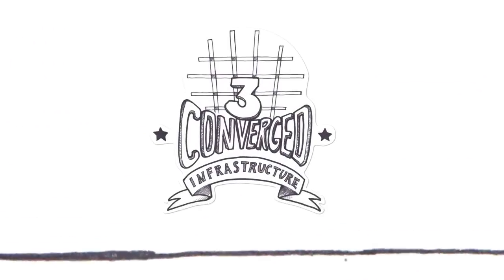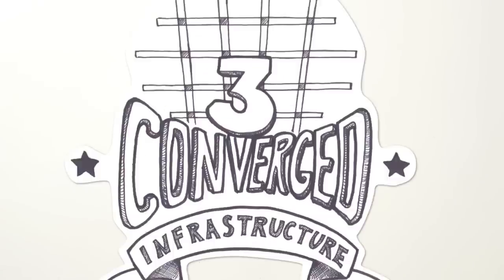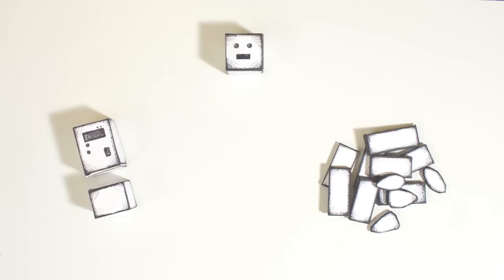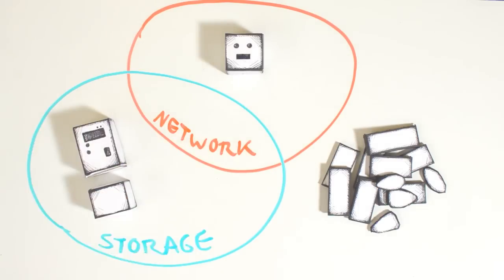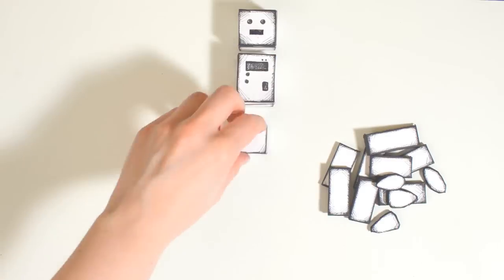Step 3, converged infrastructure. Here, it's all about unifying your environment into a single entity, where networks, storage, and servers can be managed as one.